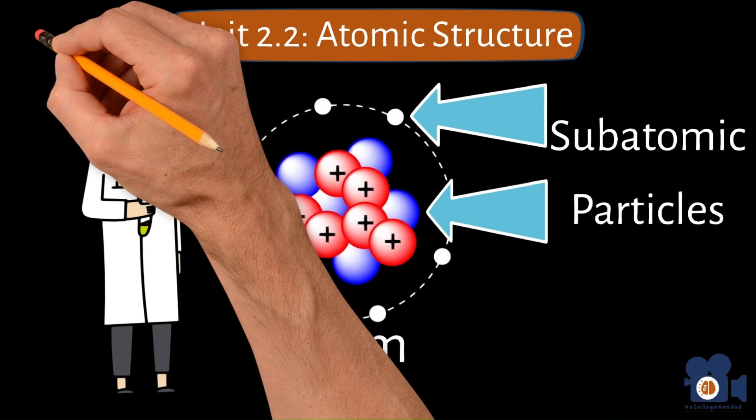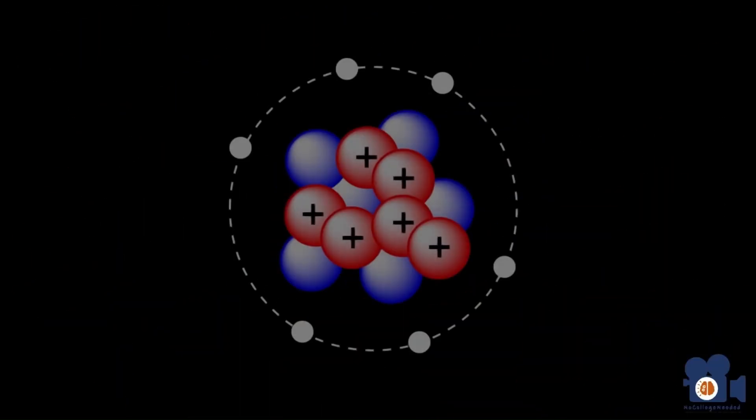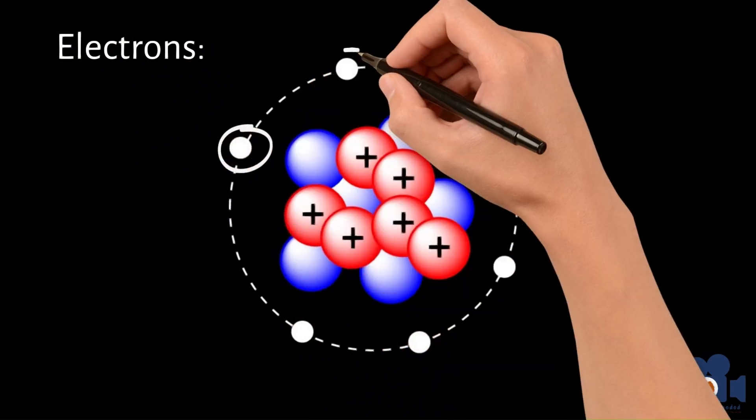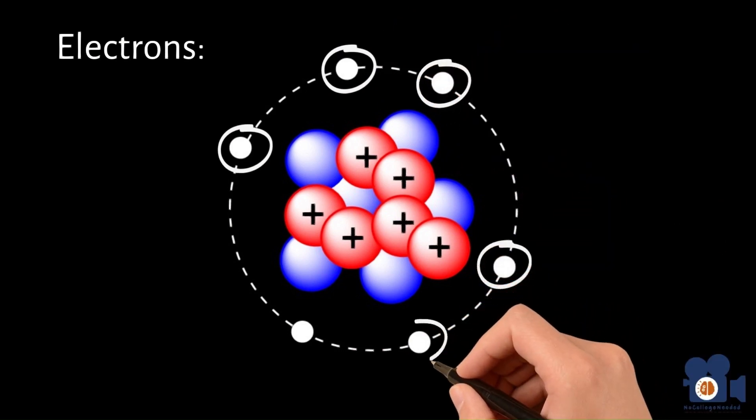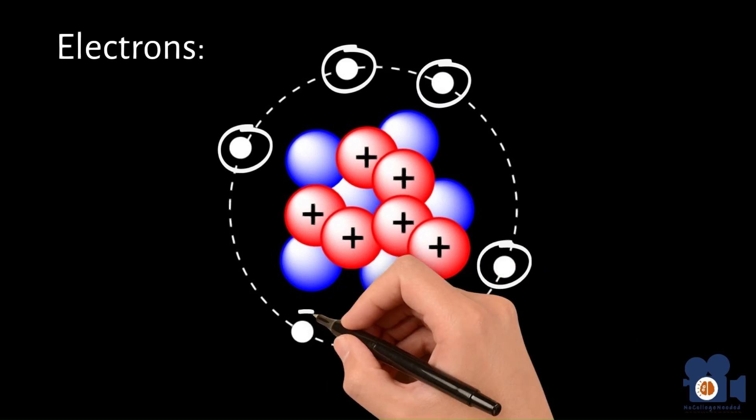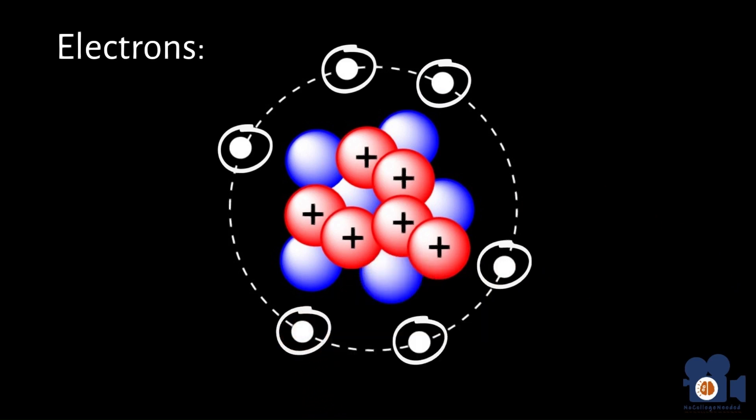The first subatomic particle that was discovered was the electron by J.J. Thompson in 1897. Electrons are negatively charged subatomic particles that are common to all elements and are almost one-two-thousandth of the mass of the other subatomic particles. They are also the particles that are responsible for electricity.